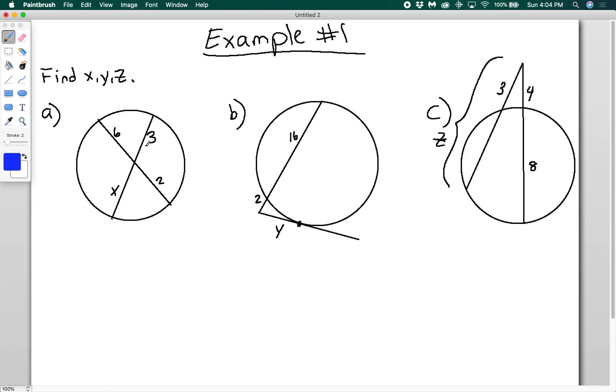For this first one, I have two chords intersecting inside, so I can use the first theorem, the chord-chord theorem. Here I can say that 3 times x is equal to 6 times 2. So 3x equals 12, and x equals 4. Nice and easy.